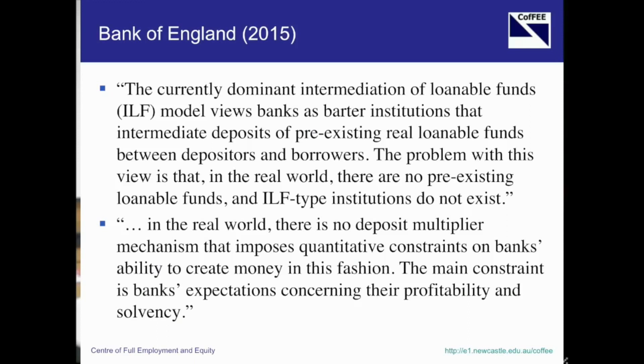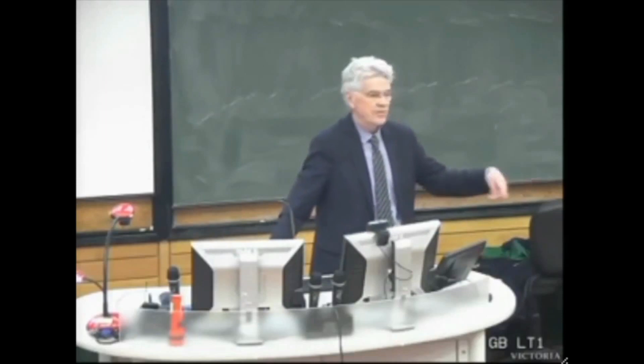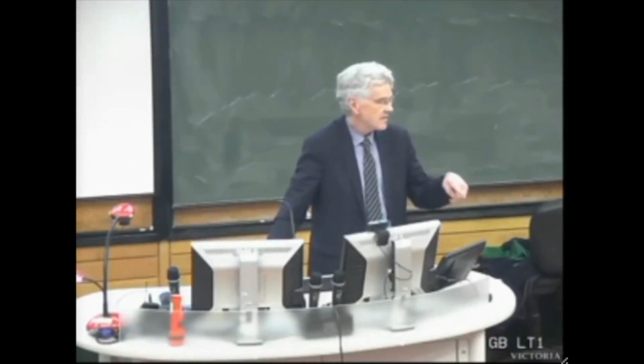So if you're an economics lecturer in the room and you've been teaching the money multiplier in your money and banking courses, stop doing it — because you're just telling lies. In the real world there's no mechanism like this that imposes quantitative constraints on banks' ability to create money. The main constraint is the bank's expectations concerning profitability, solvency, and the creditworthiness of the borrowers. The reason why banks weren't lending during the financial crisis had nothing to do with how many reserves they had — it was due to the fact that nobody wanted to borrow because everyone was scared, worried about unemployment, and firms didn't have enough sales.